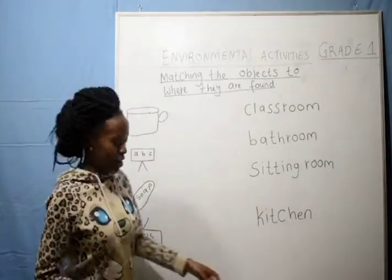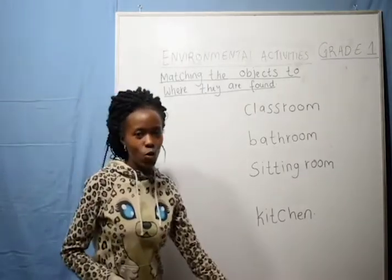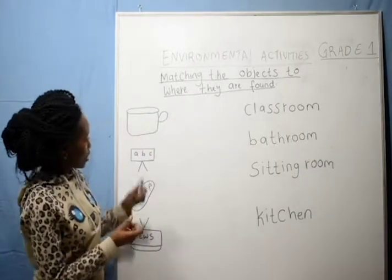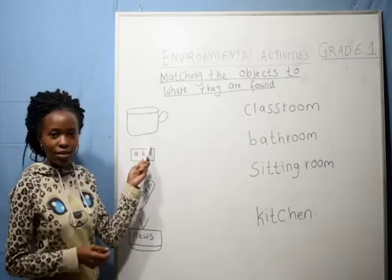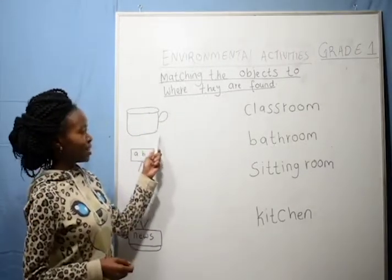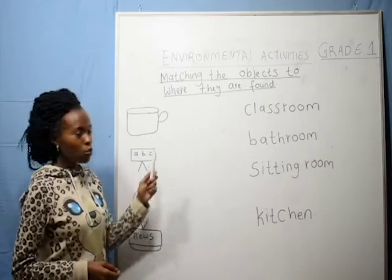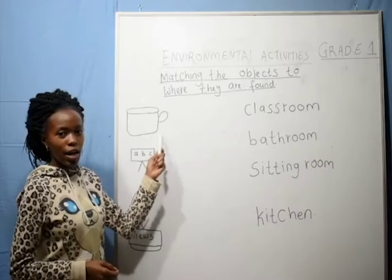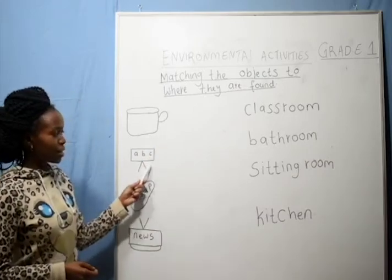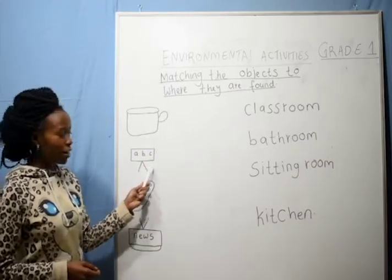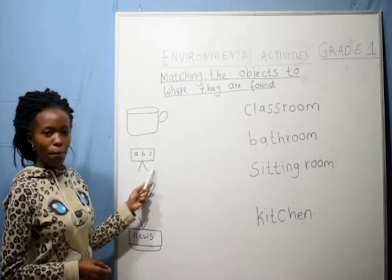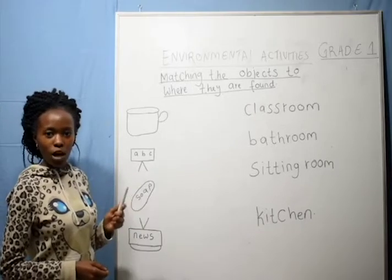That was very, very cool. Good. So what is this? Very good. This one is a cup. This one is a what? A cup. What is this? Very good. This one is a blackboard.